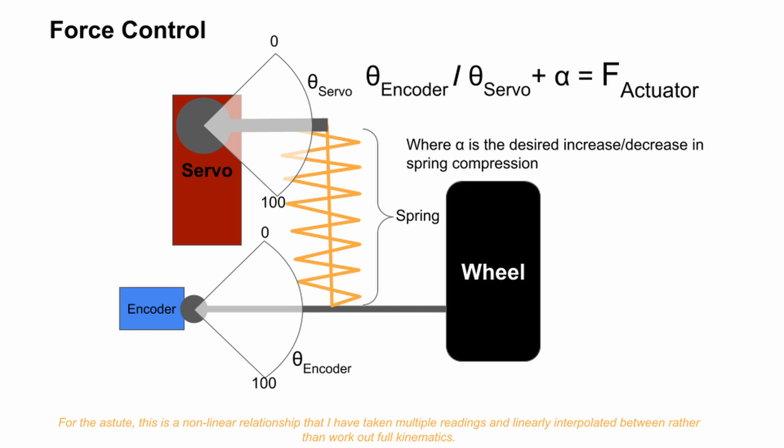The equation you see here with theta sub zero and theta sub encoder, that encapsulates the relationship between the actual control arm angle and the servo angle, where alpha is going to be the desired increase or decrease in the spring force relative to the static compression of the spring.